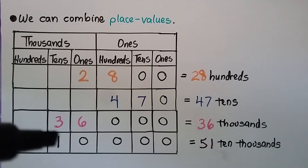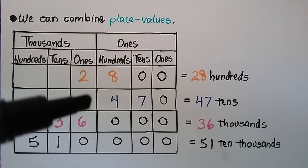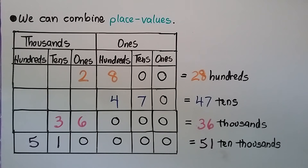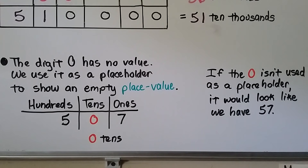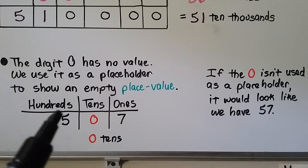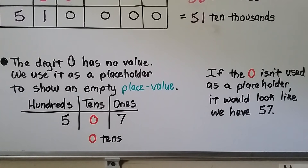We came across and combined these two place values — instead of saying hundreds, we said forty-seven tens. The digit zero has no value; we use it as a placeholder to show an empty place value. Here we have five hundreds, zero tens, and seven ones — there are no tens, just zero. The zero separates the hundreds from the ones. If the zero isn't used as a placeholder, it would look like we have fifty-seven. So we need that zero to show there are no tens and to put the five into the hundreds place.